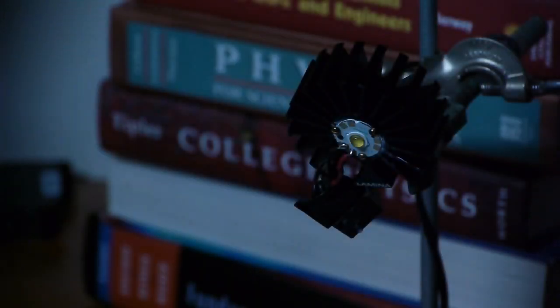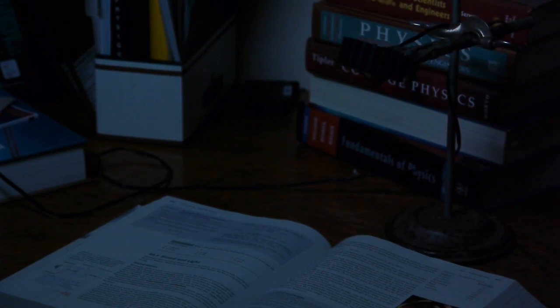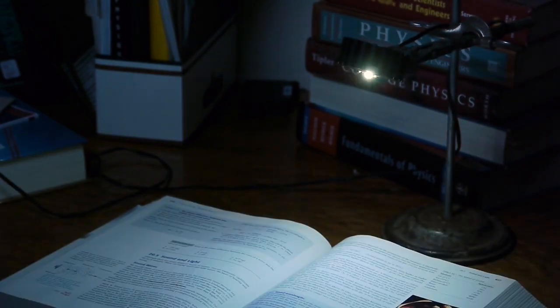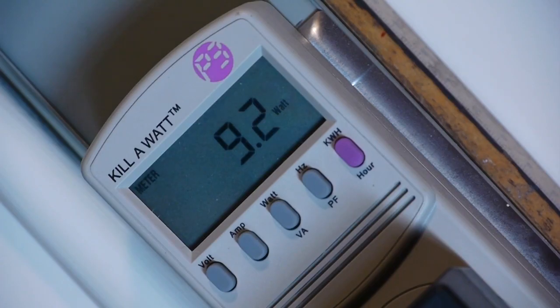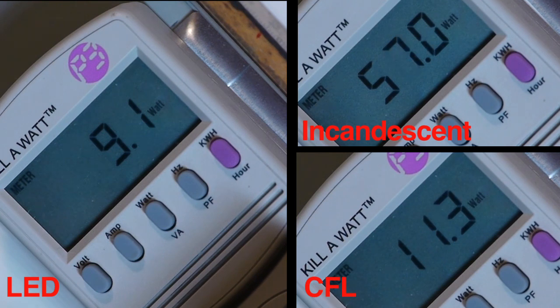Though less common than CFLs, it is also possible to use LEDs as a light source. Early LEDs had limited light output, but modern versions can easily rival the illumination of a standard bulb. This LED, giving the same illumination as the incandescent and compact fluorescent lights, uses only 9 watts. This is less than the CFL and 6 times less than the incandescent bulb. From this, it is easy to see that LED lighting is by far the most energy efficient, followed closely by CFLs.